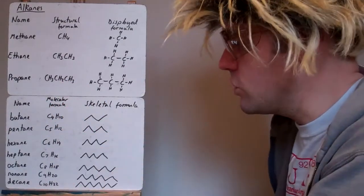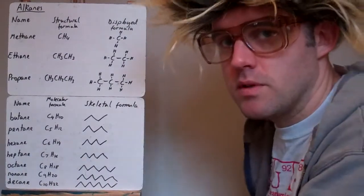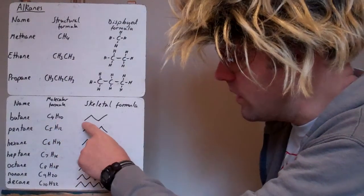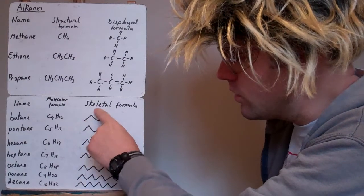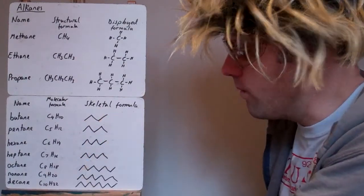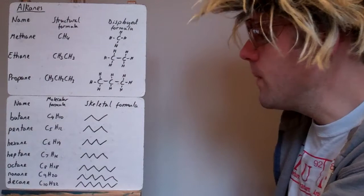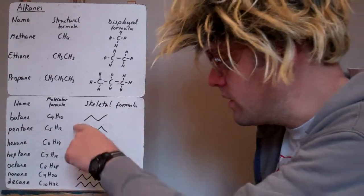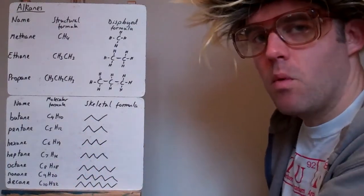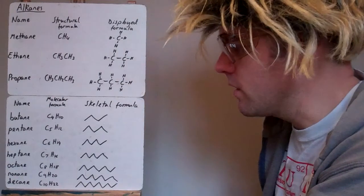Skeletal formula, then, what does this show us? It shows us the carbon to carbon bonds. So, this is butane, it's got four carbons. The end of each line is the carbons. It's one, two, three, four. So, there, we've got four carbons. And then, the zigzag shape shows us a bit more about what the shape actually looks like of butane.